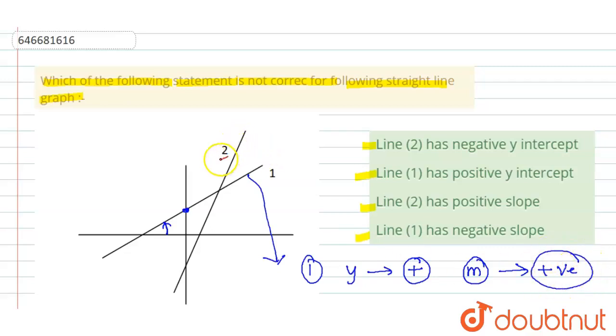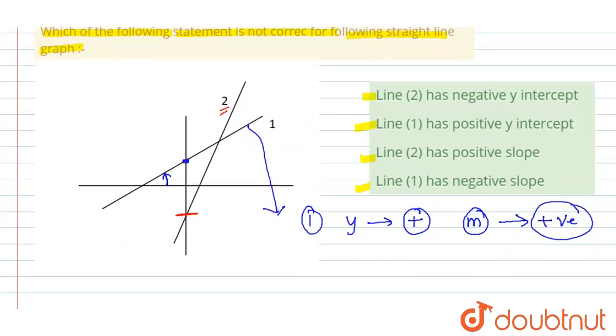Now let's analyze graph 2. Graph 2 has y-intercept here. So y-intercept of line 2 is negative and this is the angle made with the x-axis. Since this angle is less than 90 degrees, slope is positive, so slope of second line is positive.